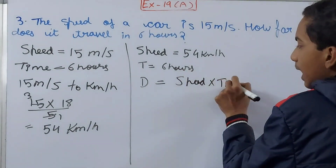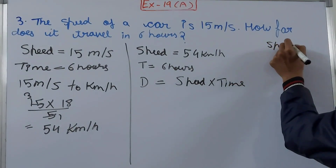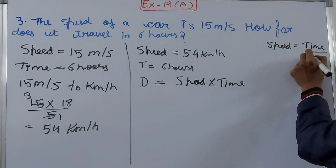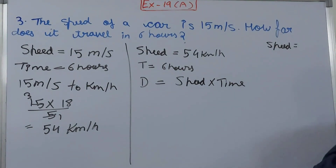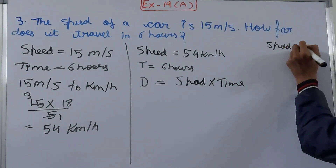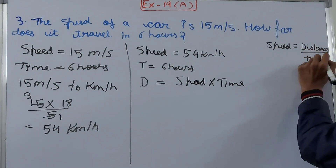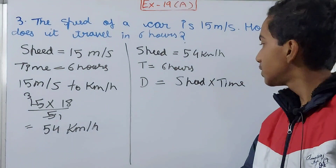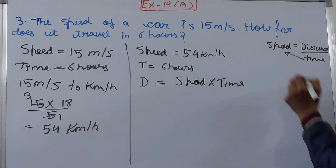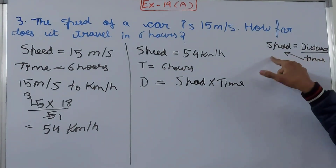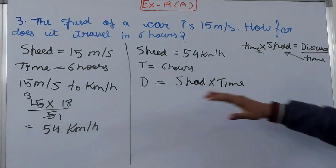Distance equals speed into time. We derive this from the formula: speed equals distance upon time. Rearranging, distance equals speed multiplied by time — the time moves to the other side and multiplies with speed. That's how we get the formula: distance = speed × time.